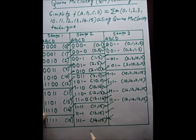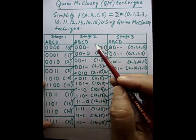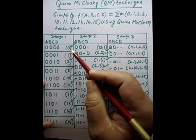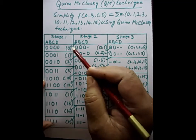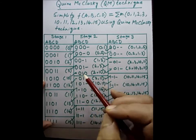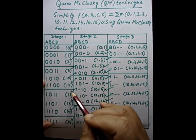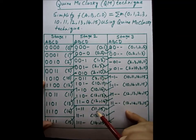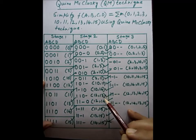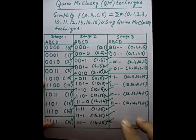After generating the second stage, we tick-mark every minterm number that got involved in a mapping. So (0,1) is involved: tick 0 and 1. (0,2) is involved: tick 2. (1,3): tick 3. (2,10): tick 10. Similarly, 11, 12, 13, 14, and 15 all appear in second-stage brackets and are tick-marked. After this step, all first-stage minterms are tick-marked.